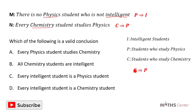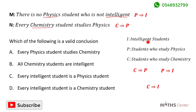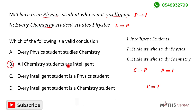If C implies P and P implies I, then one valid conclusion we can draw is that C implies I. C represents students who study chemistry and I represents students who are intelligent. So if C implies I, it means that all chemistry students are intelligent. When we look through the options, we can see that conclusion is option B: all chemistry students are intelligent. This is the valid conclusion we can draw from these two statements.